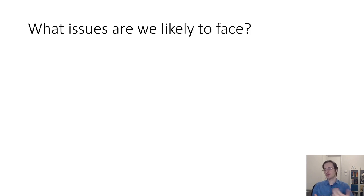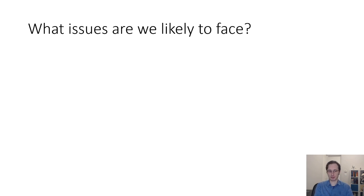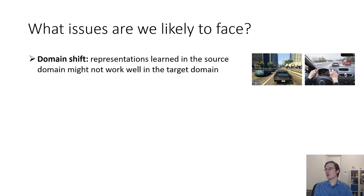Could we apply an idea like this to the reinforcement learning setting? Can we essentially just train a model on a large previous dataset and get it to either transfer to a new setting or fine-tune rapidly to a new setting? One issue we might face is the problem of domain shift. Domain shift refers to the setting where there is a systematic difference in the data distribution between the source domain and the target domain.